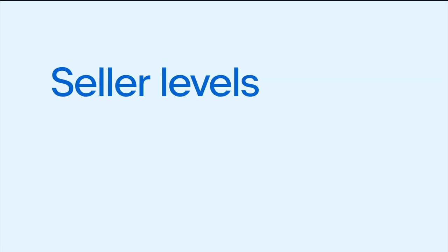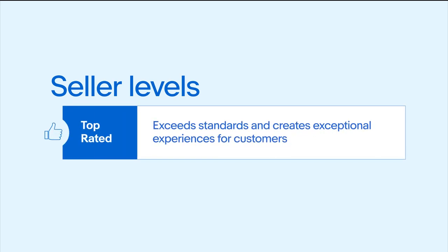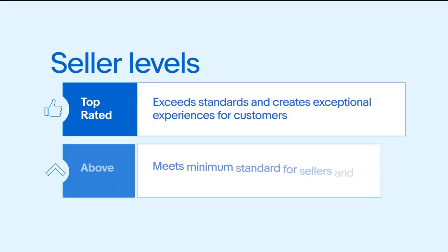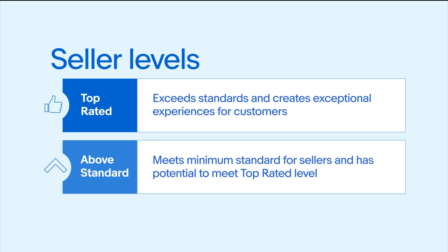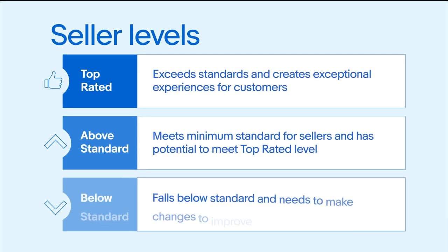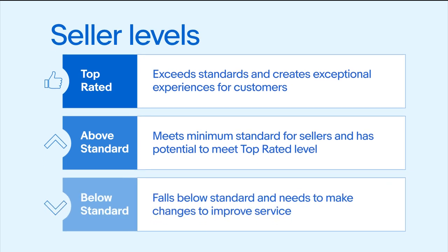Top rated means you're exceeding our performance expectations. Above standard means you're meeting our performance expectations. Below standard means that your performance has fallen below our minimum standards, leading to potential limitations on your selling activity until this improves.